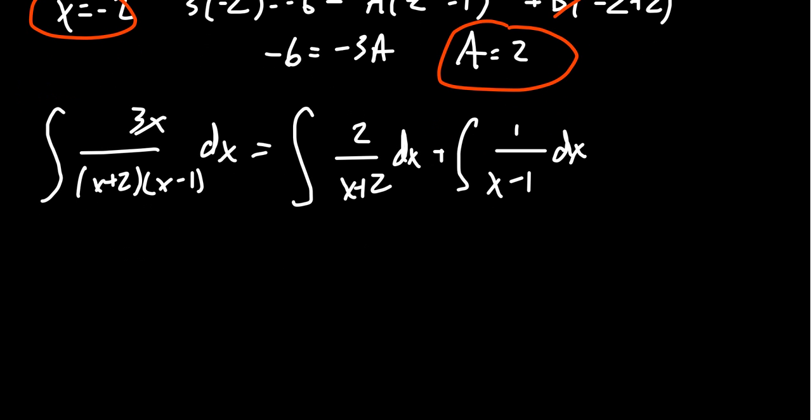And so now we've been able to write the fraction, the original fraction, as partial fractions. And with these partial fractions, we can very quickly find their antiderivatives.